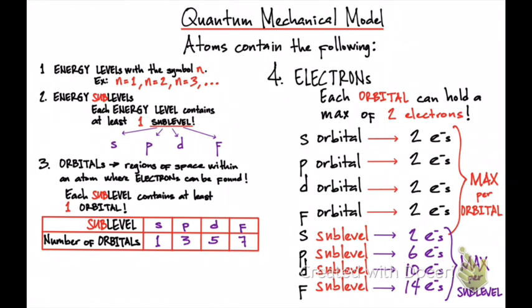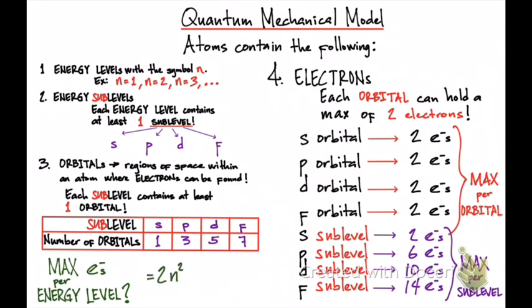On the test, I could ask you questions relating to the number of electrons or maximum number of electrons. For example, what is the maximum number of electrons that a P sublevel can hold, or an orbital can hold? I could also ask you the maximum number of electrons per energy level. To calculate this, you can use the simple equation 2n², where n is the energy level.